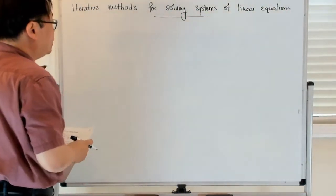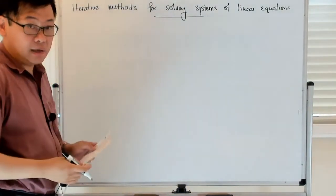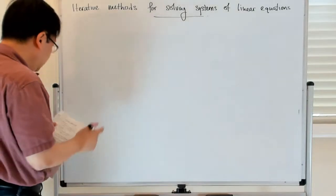So, up to this point, we've been talking about what are called direct methods, and the main example we've looked at is LU decomposition.